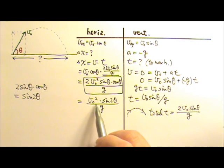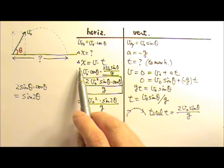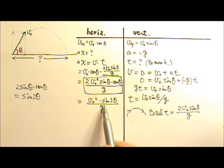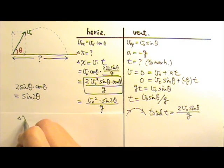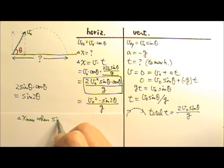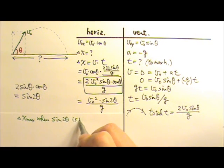Since V₀ stays the same, G doesn't change. That means to maximize the delta X, we have to maximize the sine 2 theta. So, delta X is the maximum when the sine 2 theta is the maximum.